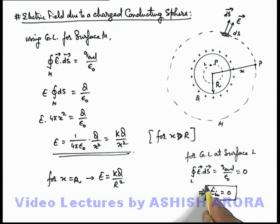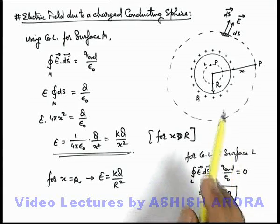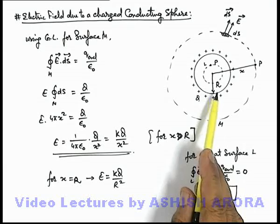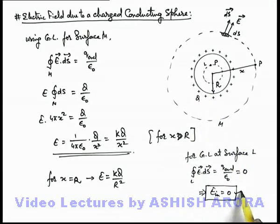And this we have already studied in the beginning that for the case of a metal sphere, always the electric field inside is zero in such a way charge is distributed on it such that the inside electric field is equal to zero.